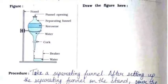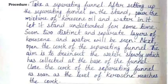We need to draw the same figure on the right hand side. The procedure is: take a separating funnel. After setting it up on the stand, pour the mixture of kerosene oil and water in it. Let it stand undisturbed for some time. Soon, two distinct and separate layers of kerosene and water will be seen.